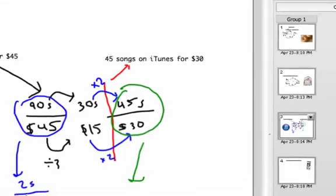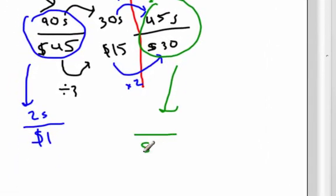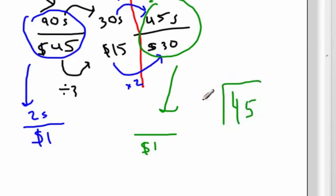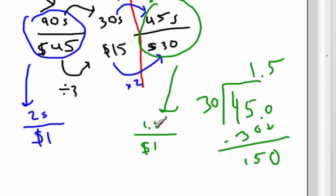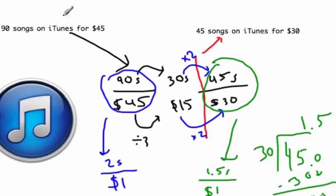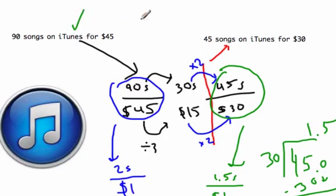Per dollar for the ninety songs for forty-five bucks deal: divide both by forty-five and you get two songs for one dollar. For this other rate, forty-five songs for thirty bucks per dollar: divide the denominator by thirty to get one dollar, but forty-five divided by thirty is one and a half — thirty goes into forty-five once with fifteen left over, giving 1.5. So you get one and a half songs per dollar with that deal. I would take the bulk deal — usually when you buy in bulk you get price breaks, and that's the case here.